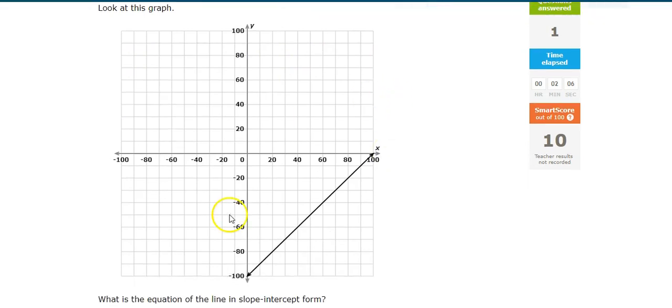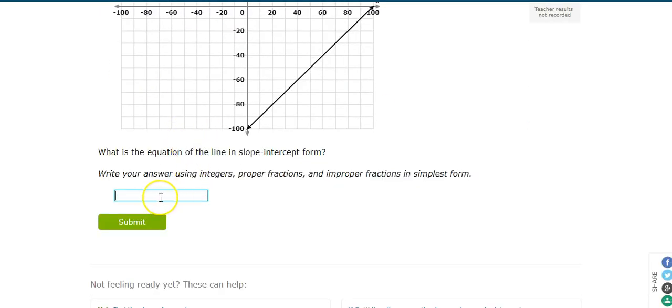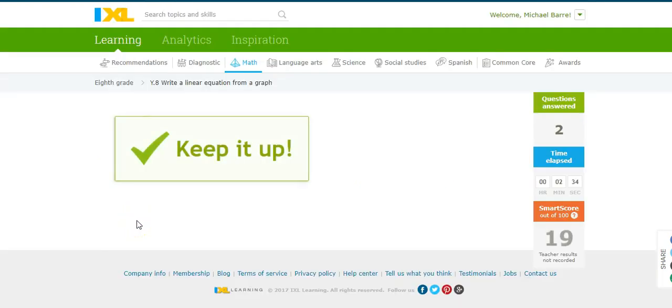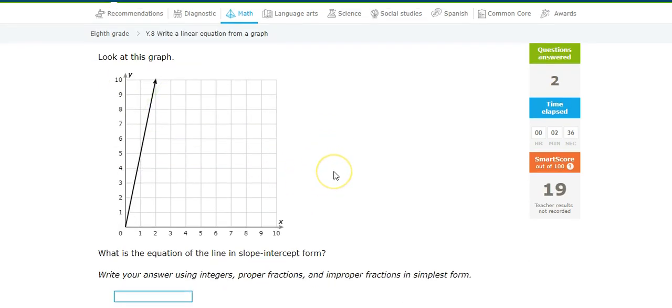Brilliant. Okay, so let's do this one. Find my slope. Looks like my slope, again, is 1 over 1, and my intercept is at negative 100. So I'm looking at y equals 1 over 1x, so just x minus 100. y equals x minus 100. Let's enter that one. y equals x minus 100.